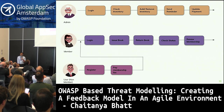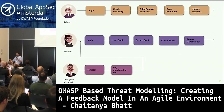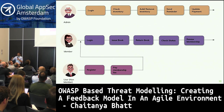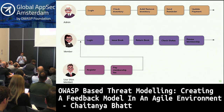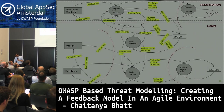Step two: identify and decompose the flows. We came up with three user flows: a non-member can register, pay the membership fee, and become a regular user. Once a regular user, they can log in, issue a book, return a book, and renew membership. On the admin side, they can manage resources, update payments for late fines, and send reminders. With that, we have identified the flows and can start recognizing the critical ones.